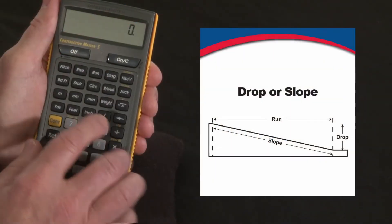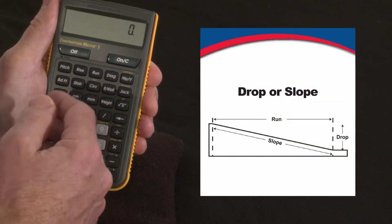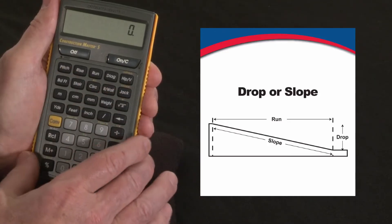Now let me show you how to use the Construction Master 5's right angle solution keys to figure the drop or slope of a pad or a driveway, something you want to drain.